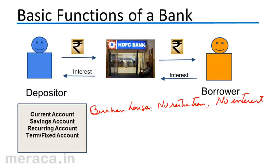During the course of our discussion on bank reconciliation statement, the bank account that we would be referring to would be the current account. The savings account, on the other hand, is largely opened by households — people who have regular monthly income. This is deposited into a savings account, and there is some restriction on withdrawals, perhaps limited to four to six withdrawals a month or a restriction per quarter.